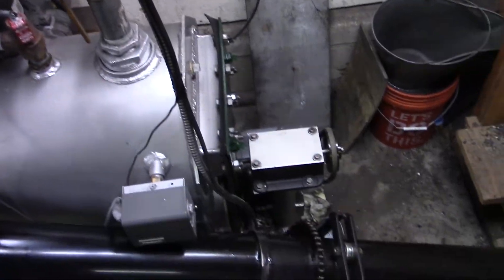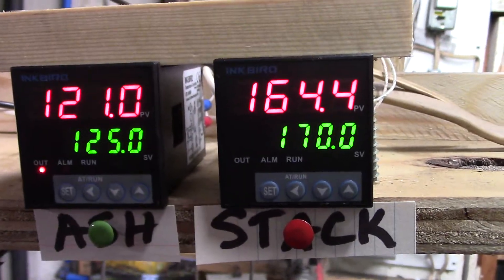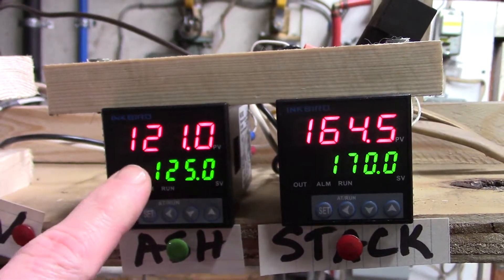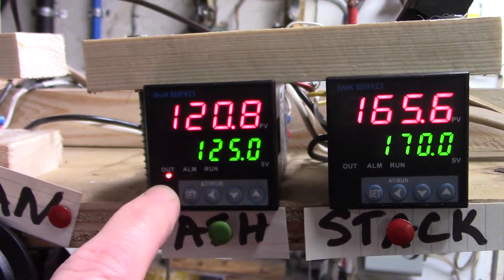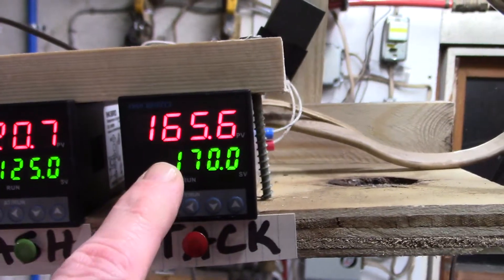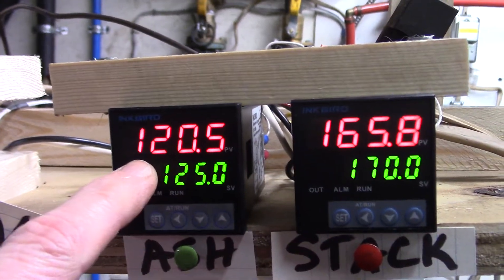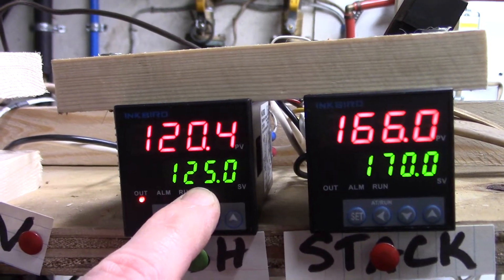As you can see right now the ashing temperature, this just came on, it's actually running right now. The fan is just running right now because it's actually in stack temperature inhibit right now. So the ash temperature has dropped below the set point so the output is activated on this one.